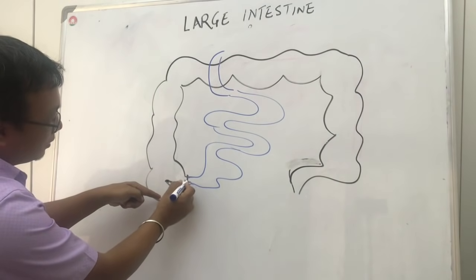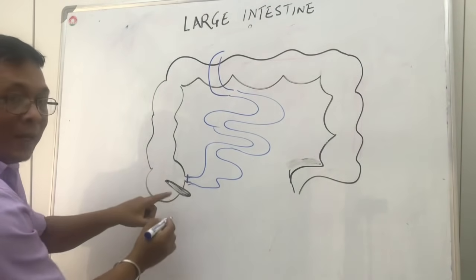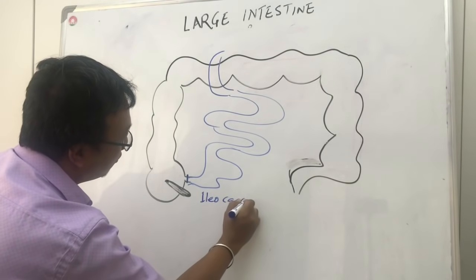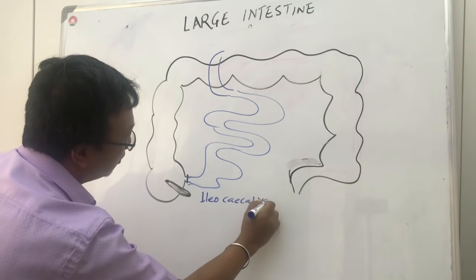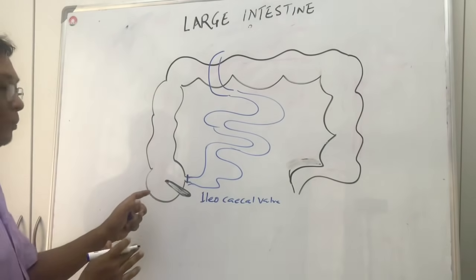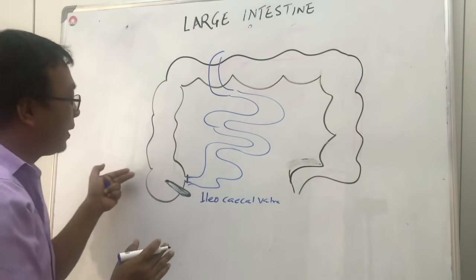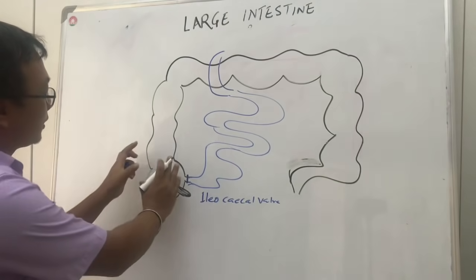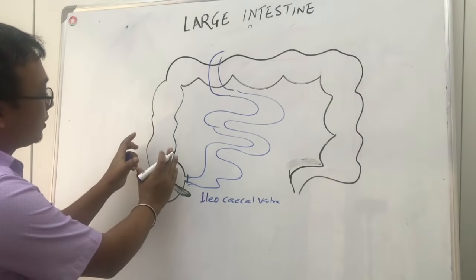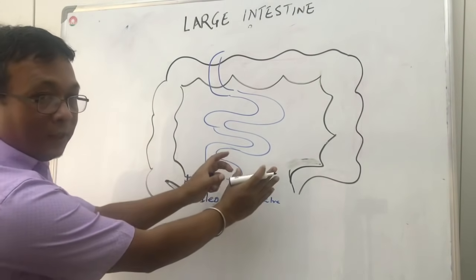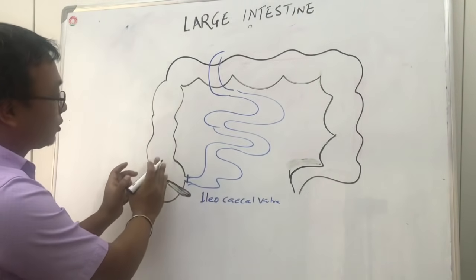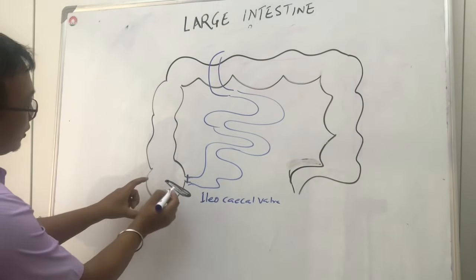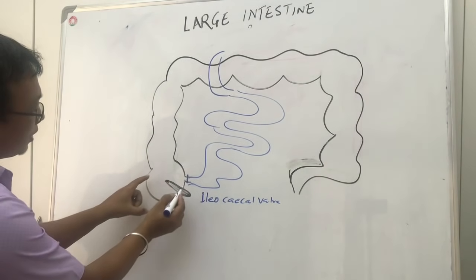At the end of the terminal ileum, where it joins the cecum, there is a valve called the ileocecal valve. This ileocecal valve prevents the back flow of food contents or digestive materials from the large intestine back to the small intestine.